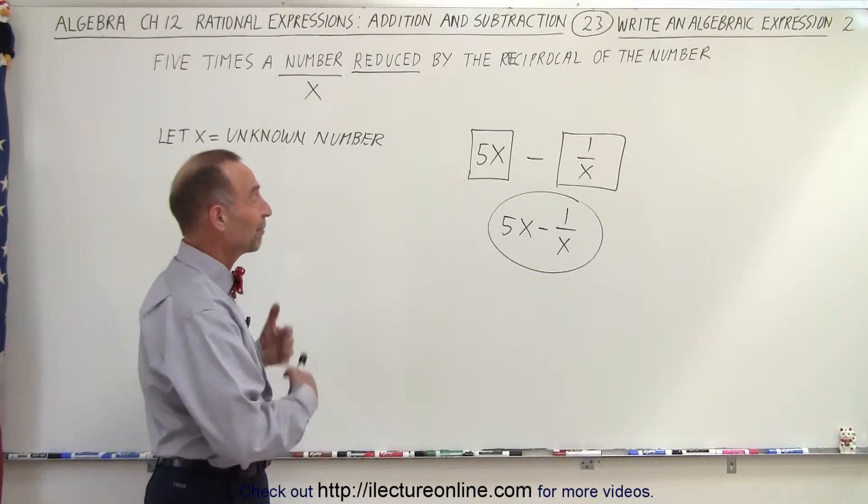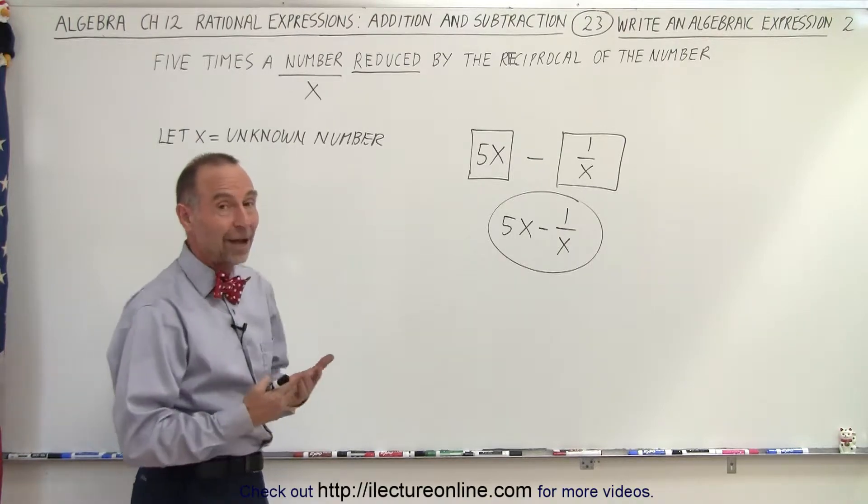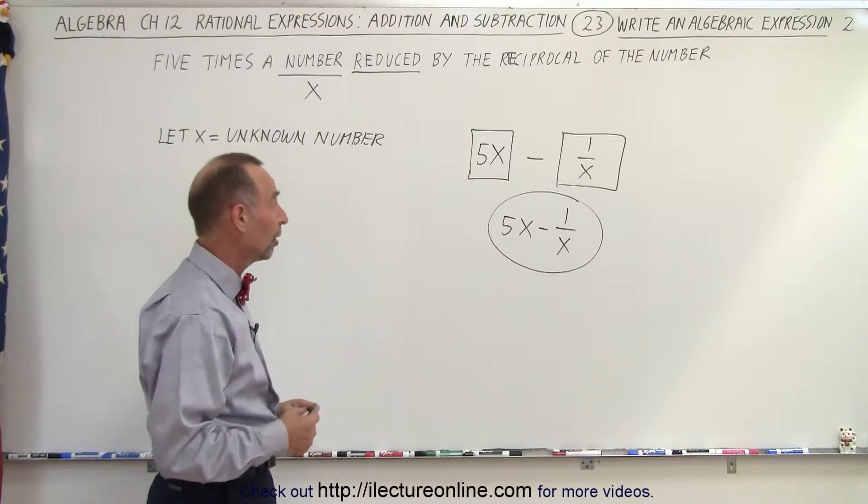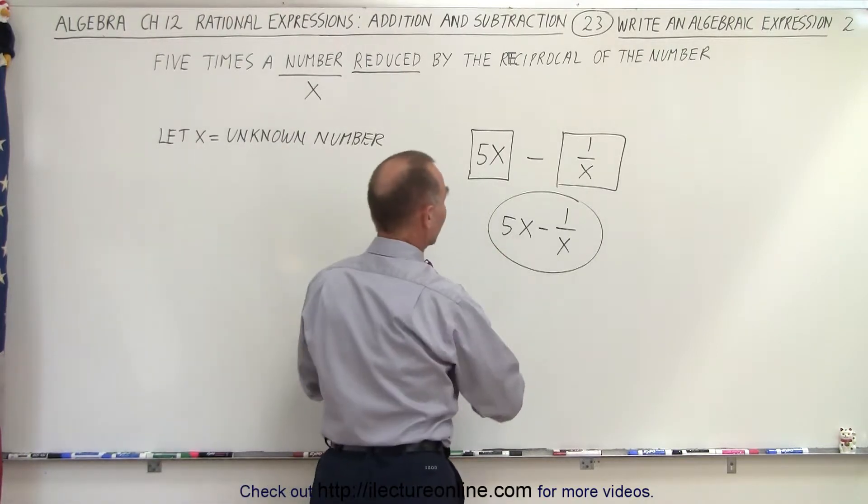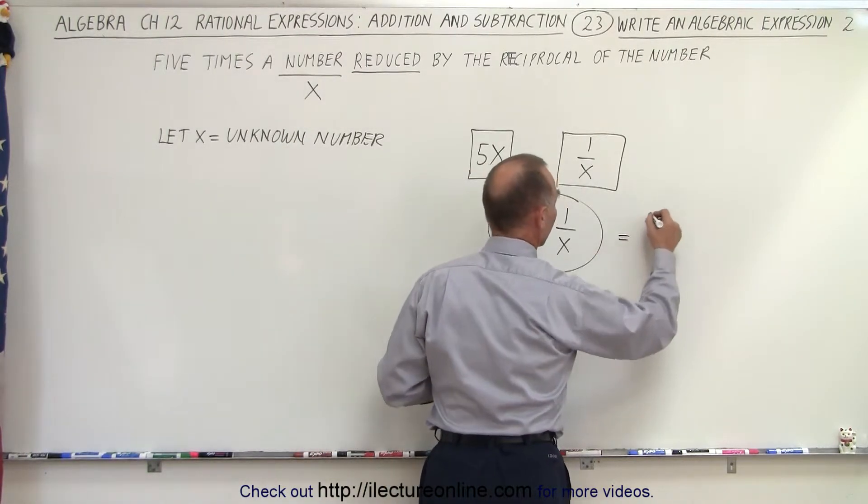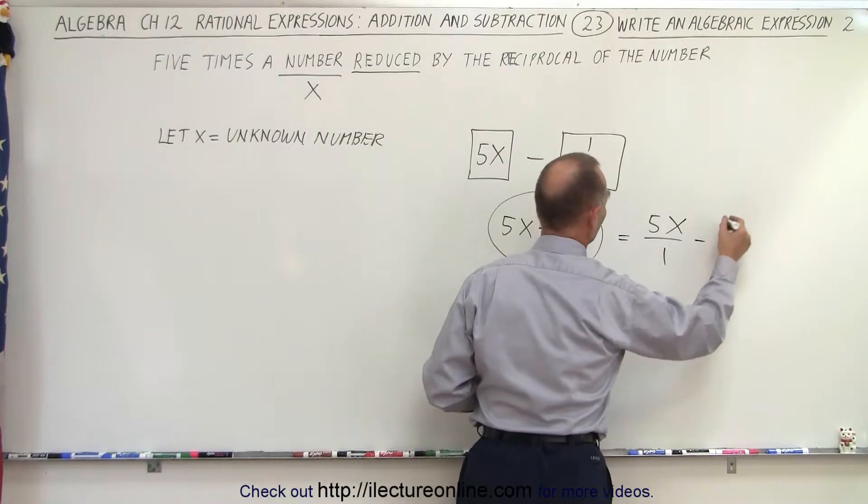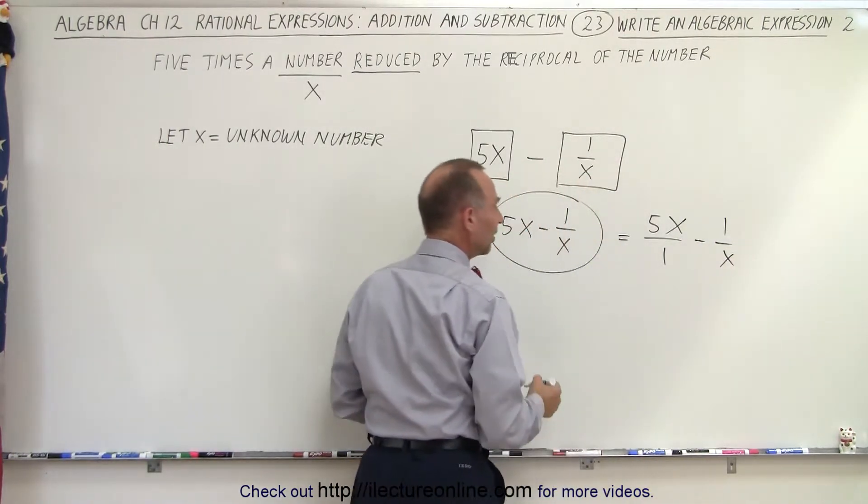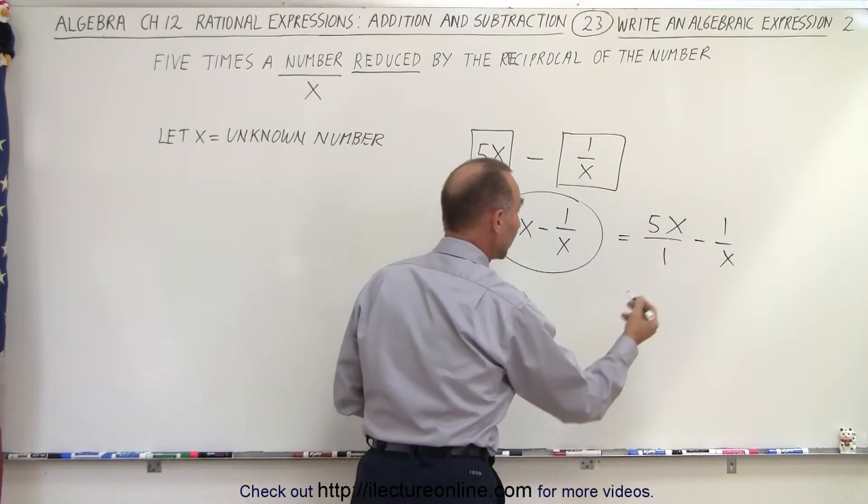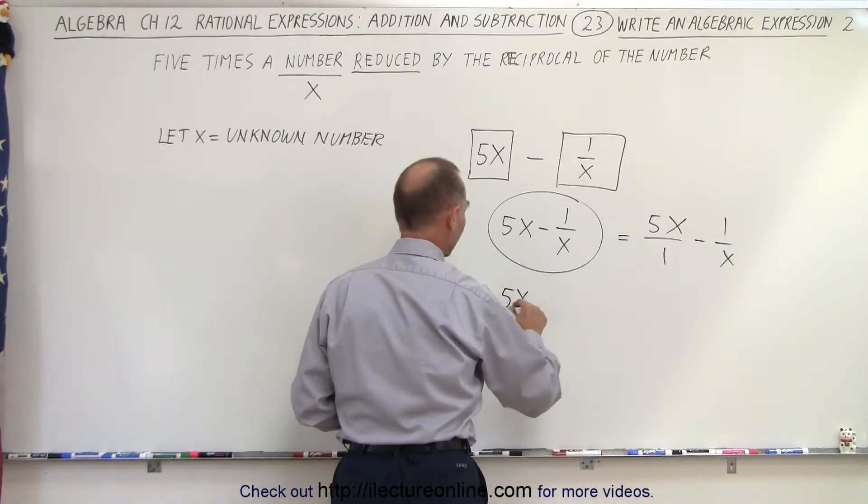Now since of course we've learned how to write everything over a common denominator, we perhaps should apply that here. So what we're going to do here is write this as 5x over 1 minus 1 over x. And then we see that we have a common denominator equal to x. So we have 5x over 1.